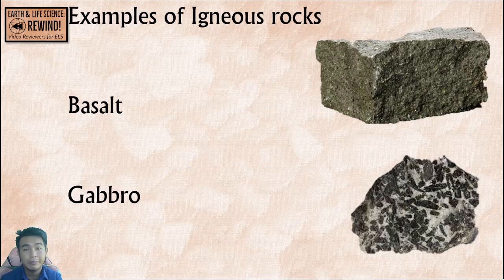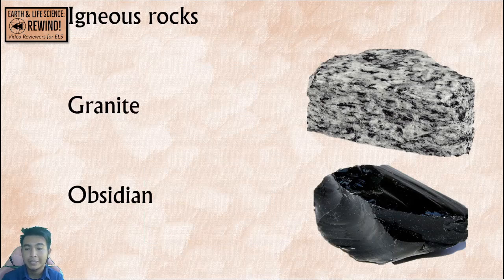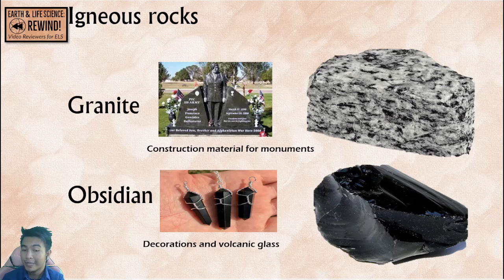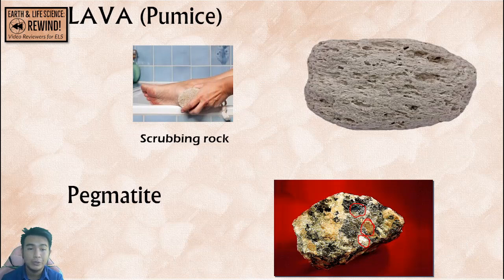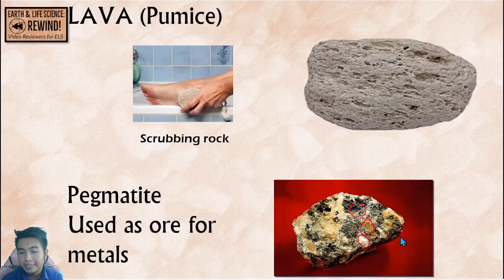Some igneous rocks and their uses: basalt and gabbro were used as primitive tools in the past and can also be construction material. Granite can be used as construction material for monuments. Obsidian can be used as volcanic glass decorations — it's an attractive kind of igneous rock. Pumice can be used as a scrubbing rock. Pegmatite can be used as ore for metals.